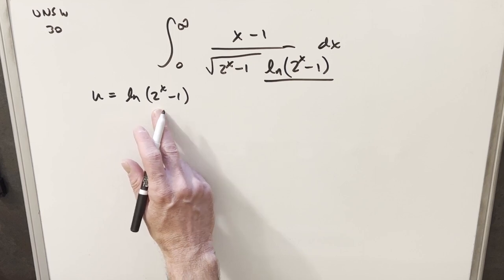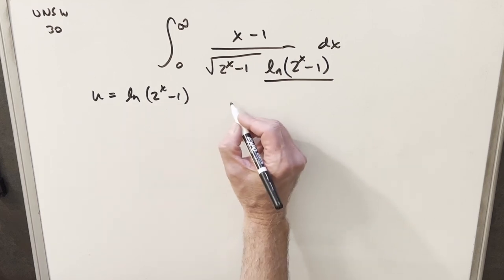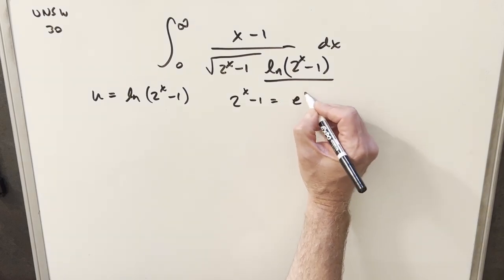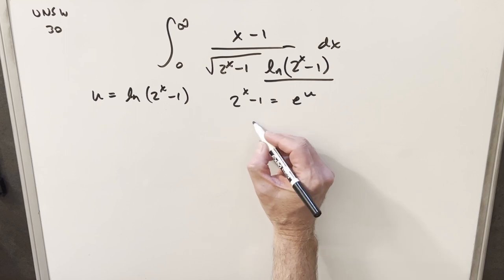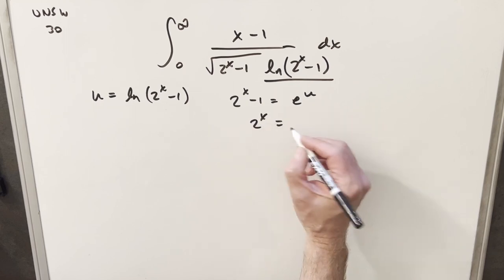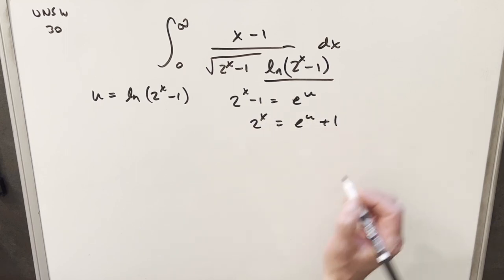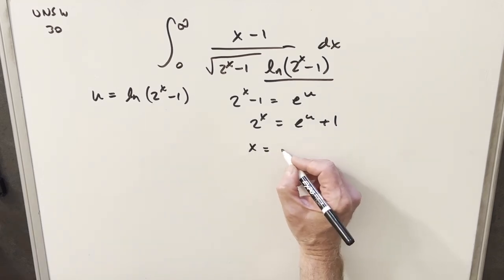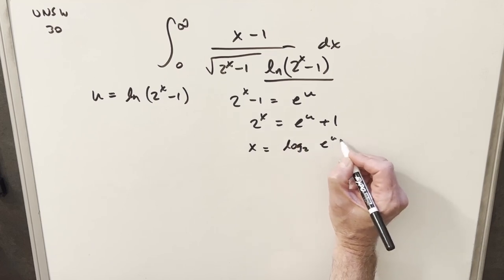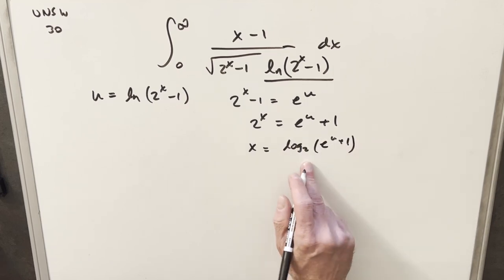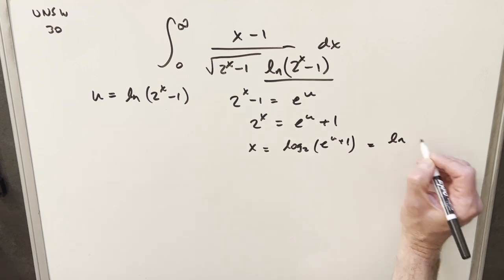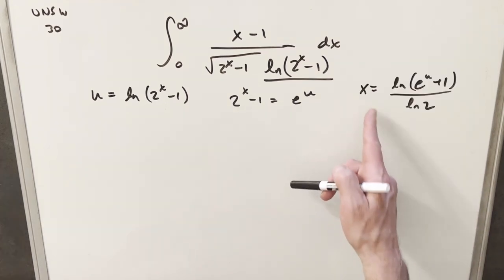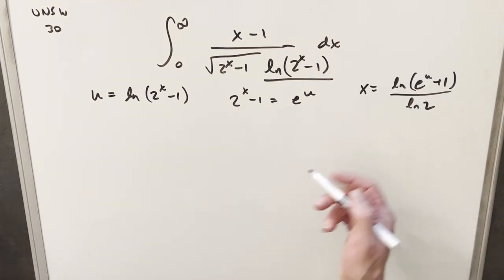From here, I want to isolate x. Using the property of the natural log, we can write 2x minus 1 as e to the u. Then adding 1 on both sides, 2x equals e to the u plus 1. Taking log base 2 on both sides, x equals log base 2 of e to the u plus 1. Using the change of base formula, we can write this as natural log of e to the u plus 1 over natural log 2.